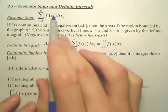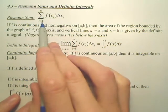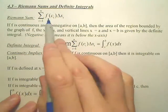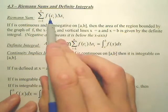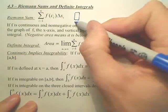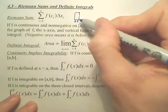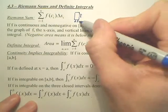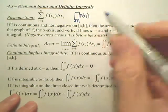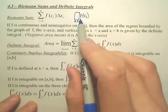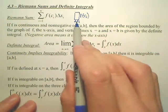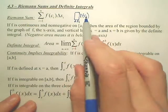This is called summation notation. I is where you start. N is how many intervals. F of C is the height of a rectangle. If you think of a rectangle, this is change of X. This is F of C. So there's your I. F of C sub I.